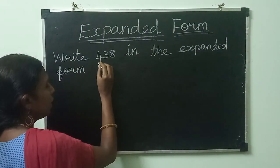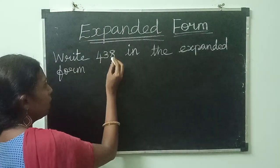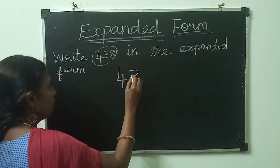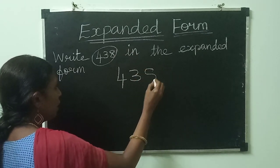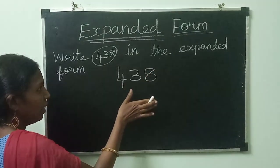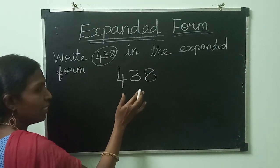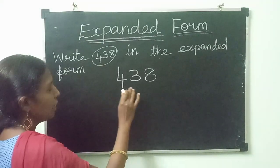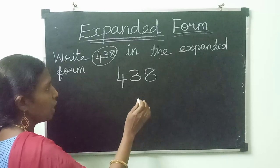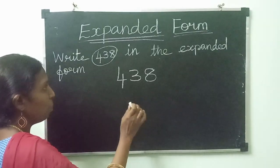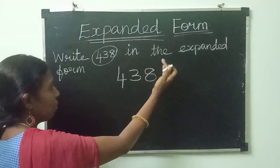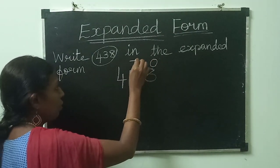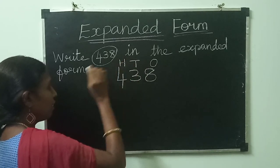Look at this question. Listen carefully, children. The given number is 438 and we have to find the expanded form for it. First, we have to give each and every digit a place name above it, from right to left: O for ones, T for tens, H for hundreds.